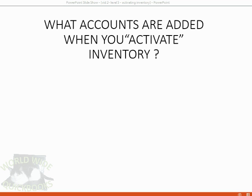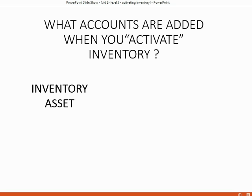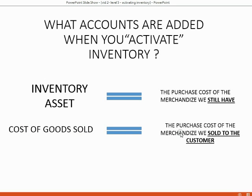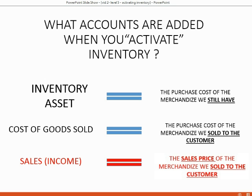What accounts are added when you activate inventory? When we clicked that preference, QuickBooks added an account called Inventory Asset. Inventory Asset is the purchase cost of the merchandise we still have — merchandise we purchased but have not yet sold to the customer. QuickBooks also automatically added an account called Cost of Goods Sold, which is the purchase cost of the merchandise we sold and already gave to the customer. Unfortunately, you have to add your own sales income account to hold all the money that comes in from the customer — the accumulated total of all sales prices of merchandise sold.